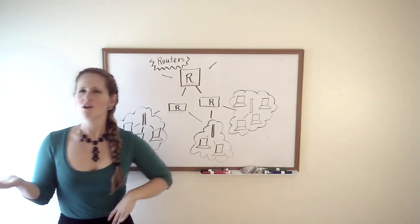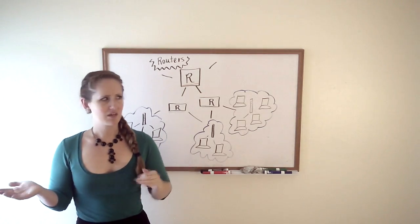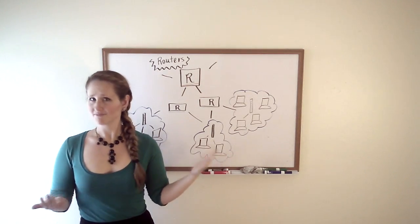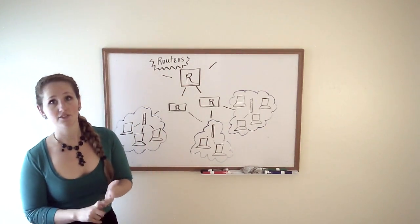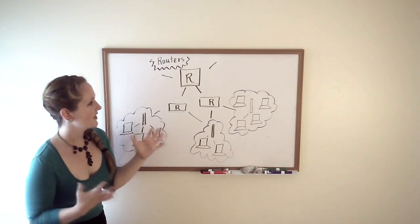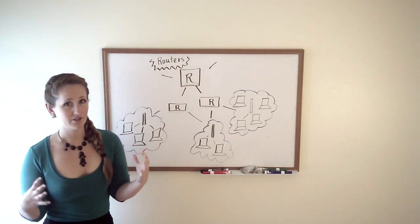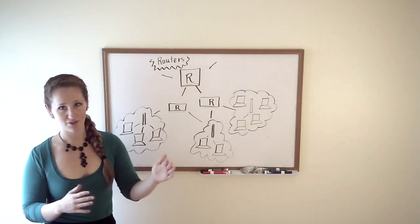And it can take information and say, all right, I don't know exactly where that's going, but I'll pass it on to the right direction. And that's really all it takes. Routers can be different sizes, different capacities, but what they do is just know their own neighborhood, take the information and pass it on in the right direction.